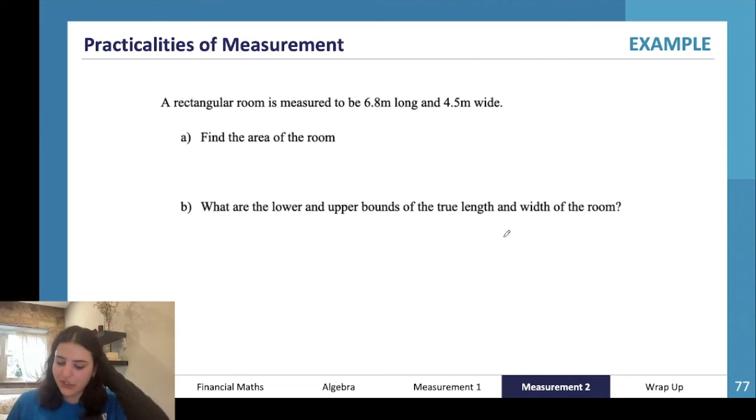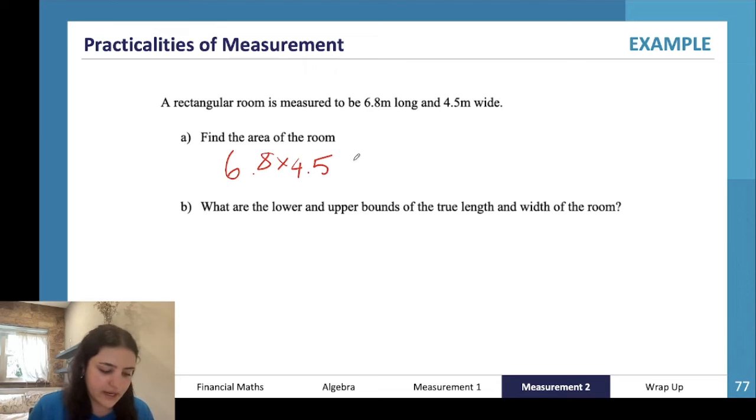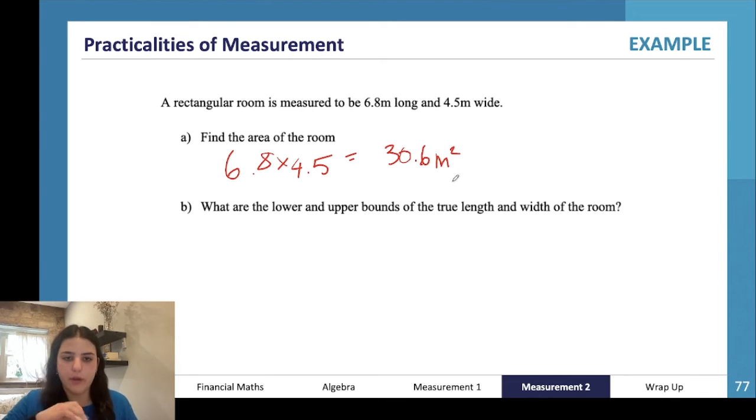And then our final question - a rectangular room is measured to be 6.8 meters long and 4.5 meters wide. Find the area of the room. So the area of the room is just going to be the long side times the width - 6.8 times 4.5. So 6.8 times 4.5 gives us 30.6 meters squared.